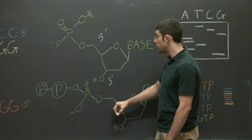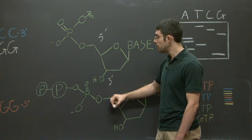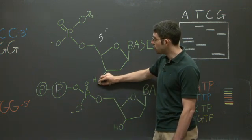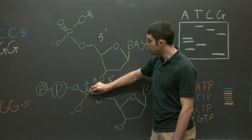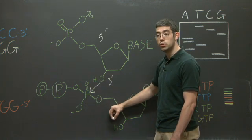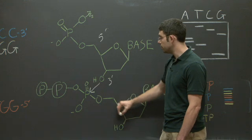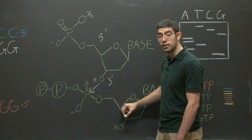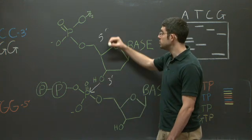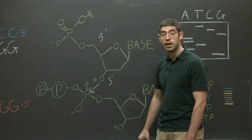This hydroxyl group is very important. That's because when a new nucleotide is added, this hydroxyl group undergoes a covalent bond with the phosphate on the new nucleotide and then adds the new nucleotide that way. So you can see you're adding in the 5 prime to 3 prime direction.